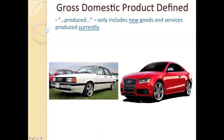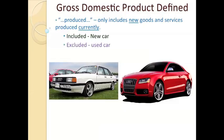What would count for both of these products being sold is any commission made this year by a car dealer. When they sell the old Audi and the new Audi, the dealer is going to get a little profit, the commission for the sale. And that would count towards GDP. So fundamentally, a new car would count towards GDP whereas a used car would not.